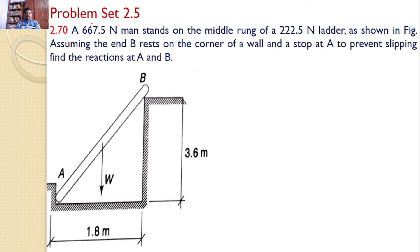In this tutorial, we will discuss problem 2.70. A 667.5 Newton man stands on the middle rung of a 222.5 Newton ladder as shown in the figure. Assuming the end B rests on the corner of a wall and a stop at A to prevent slipping, find the reactions at A and B.